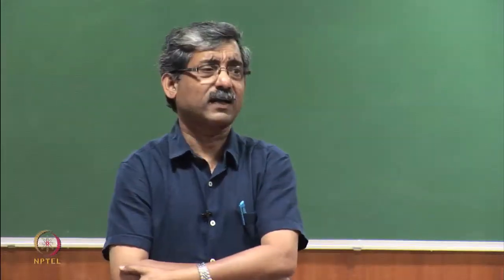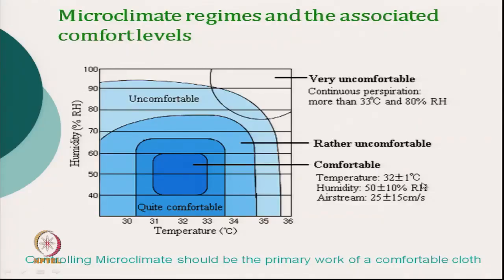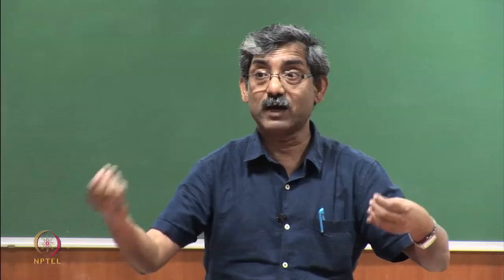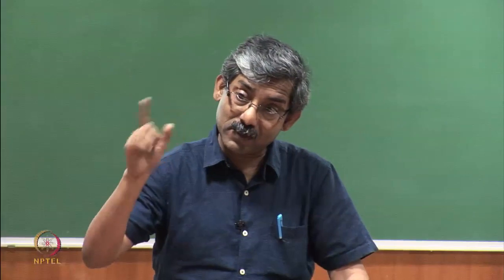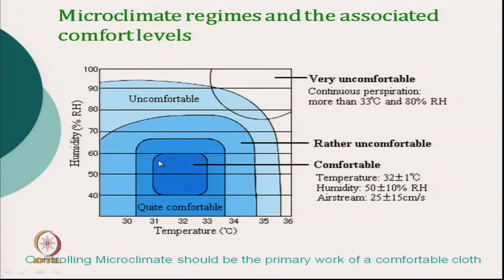Controlling the microclimate is important and it is controlled by the proper selection of clothing. Our targeted microclimate temperature should be 32 plus or minus 1 degree Celsius. As discussed, if environmental temperature is say 25 degree Celsius we feel comfortable, and at that condition the microclimate temperature is around 32 to 33 degrees — that is the most comfortable zone.